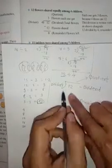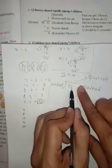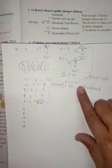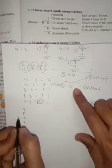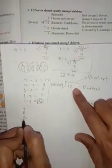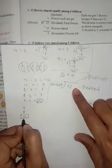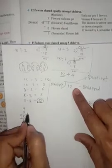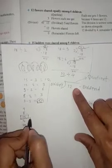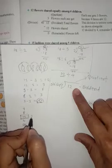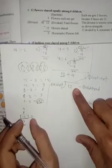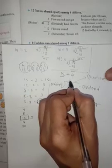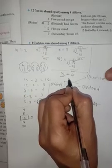Now let's apply the table of four to divide. Four ones are four, four twos are eight, four threes are twelve. So from the four times table, four threes are twelve — and 12 appears in our problem, so we write 3 as the quotient.